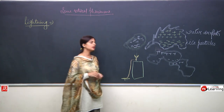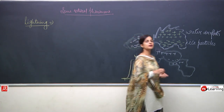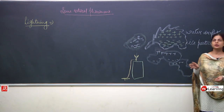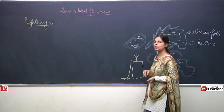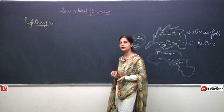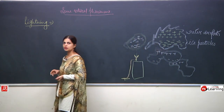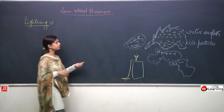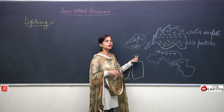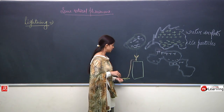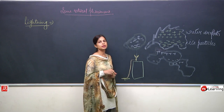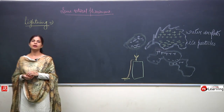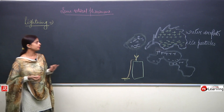Earthing means the transfer of charge from an object to the surface of the earth. So the process by which charge passes from the cloud safely into the ground through the lightning conductor is known as earthing.